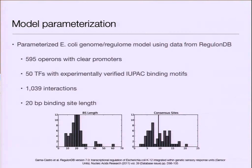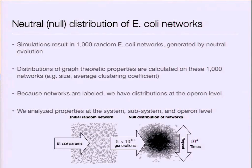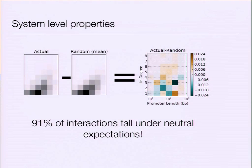I parameterized the model with real data. The E. coli network, for instance, has 1,000 interactions and 595 operons. I developed a distribution of 1,000 random E. coli networks that would be the result of neutral evolution. Because we have a distribution of networks, we can calculate network properties on them — motifs, clustering coefficient, degree distribution. I was able to show that 91% of interactions actually fall under neutral expectations. Unlike previous work, which said these networks are largely formed by adaptive processes, I found that about 91% are formed by neutral processes. This is a paradigm shift in how we view cis-regulatory networks.